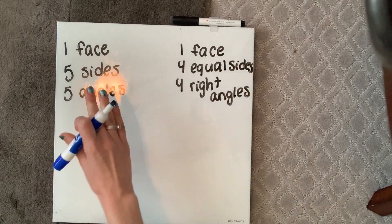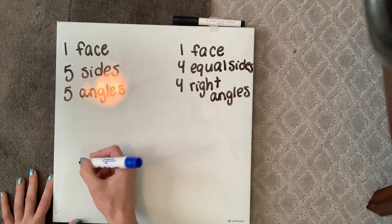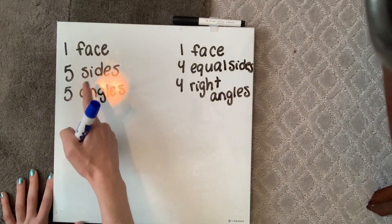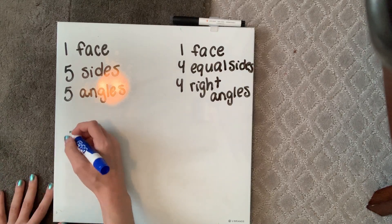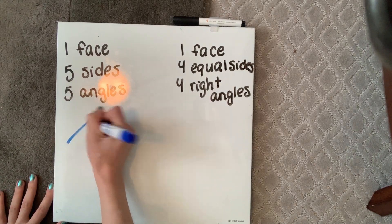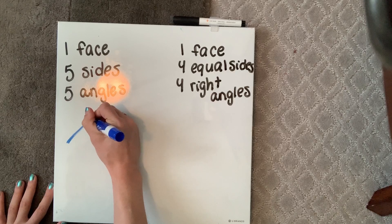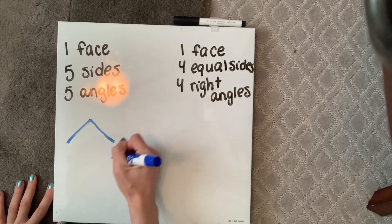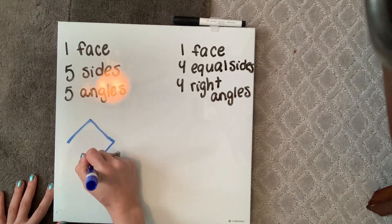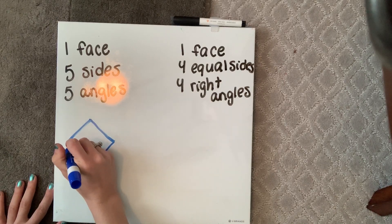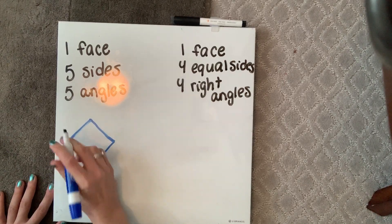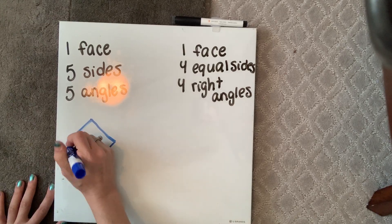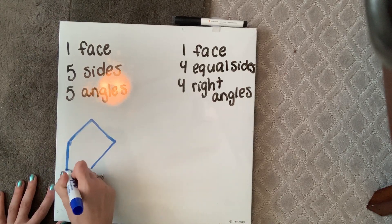I like to start off by drawing the sides first. Remember, they've got to connect to form that one face. So let's go ahead and draw our sides — one, two, three, four, let's make that one a little more angular, and five.